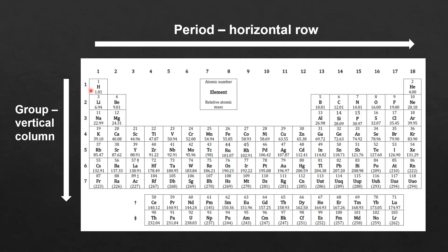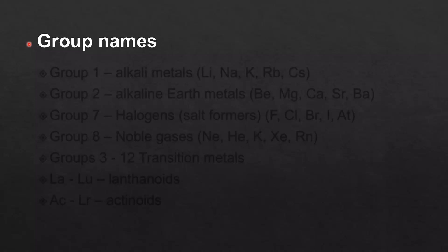So Period 1 is hydrogen to helium. Period 2 is lithium to neon. Period 3 is sodium to argon. Period 4 is potassium to krypton, and so on. Next we'll have a look at the group names.